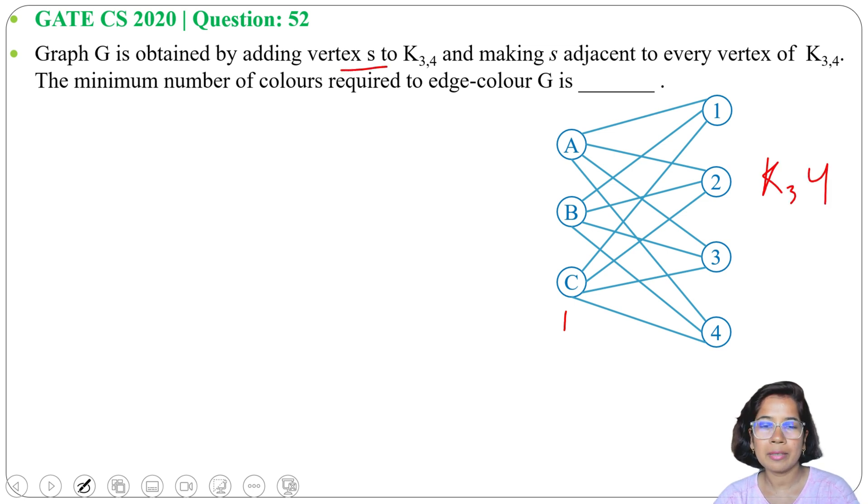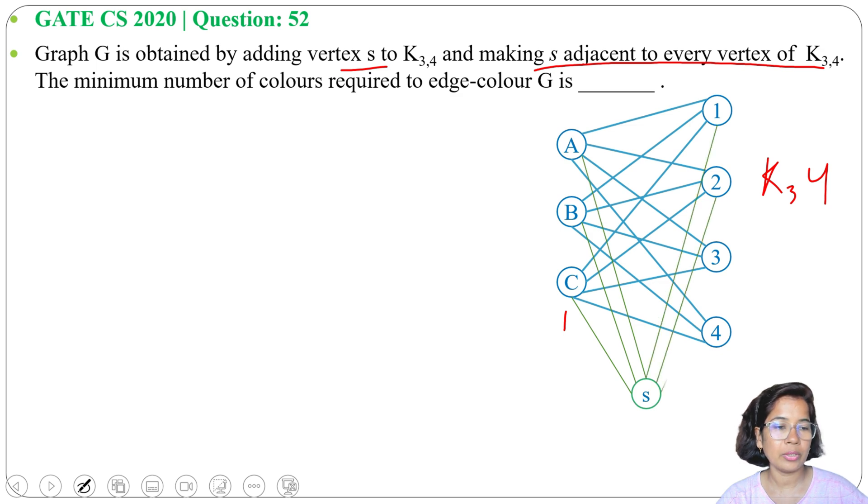Now we add a vertex S, and S is adjacent to every vertex of K3,4. So there are edges from S to C, S to B, S to A, and S to 1, 2, 3, 4. Now S is adjacent to every vertex of K3,4.